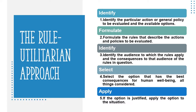Similar to the act utilitarian approach, the rule utilitarian approach starts by identifying all possibilities — nothing is off the table. But afterwards, a list of rules that cannot be crossed is formulated. This list of rules acts as a filter for the options. After filtering the options, we use the remaining options to identify our audience and address them. Then we select the option that maximizes the benefit while double-checking again with our list of rules.